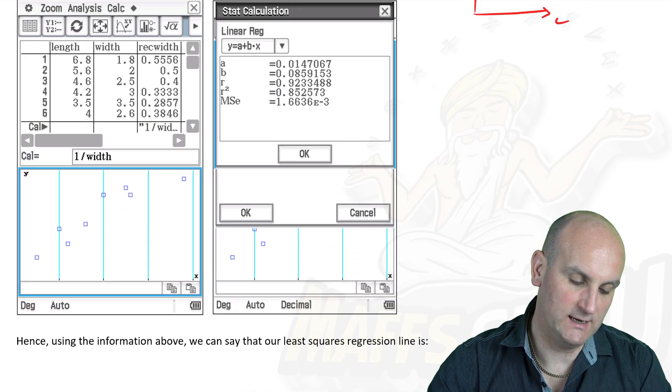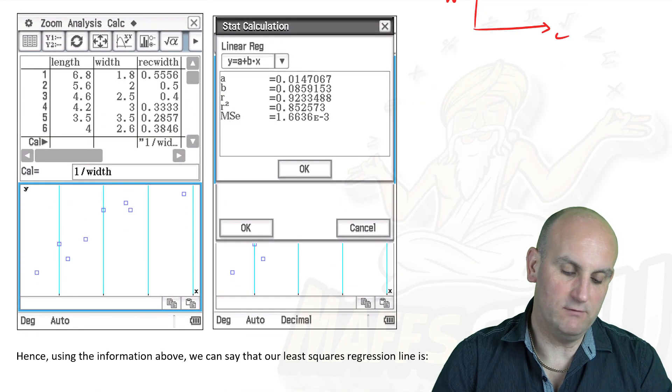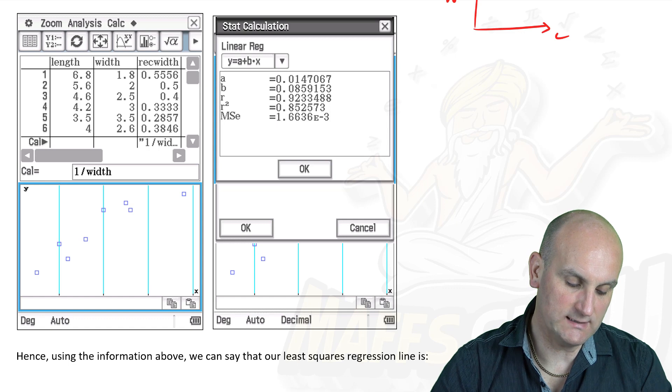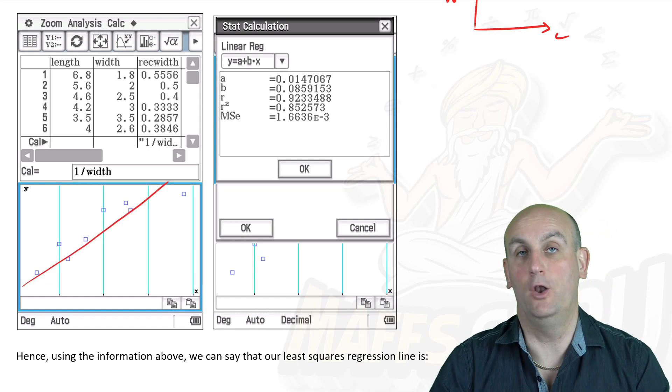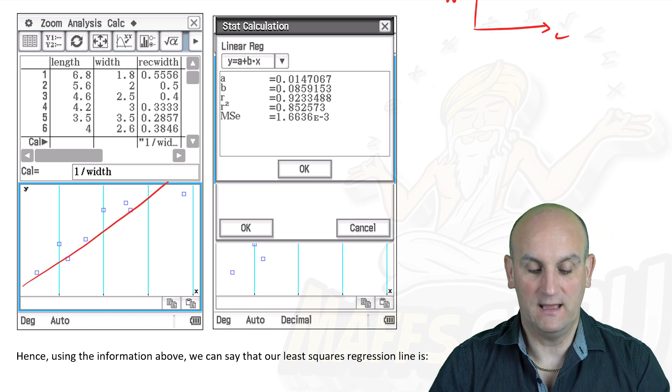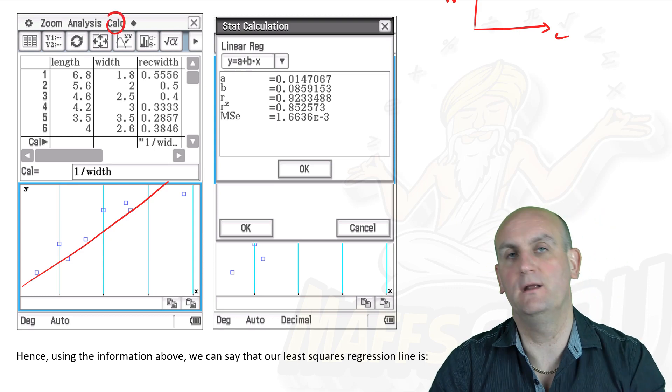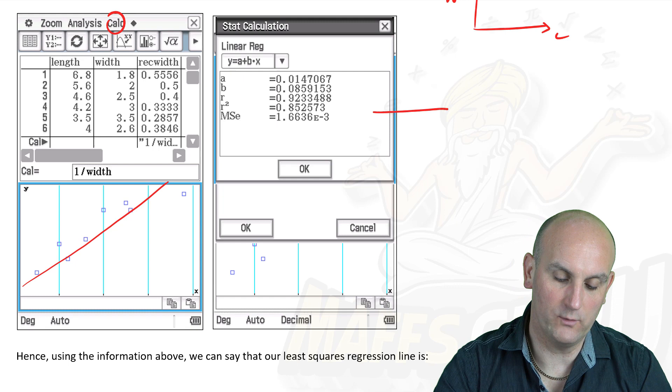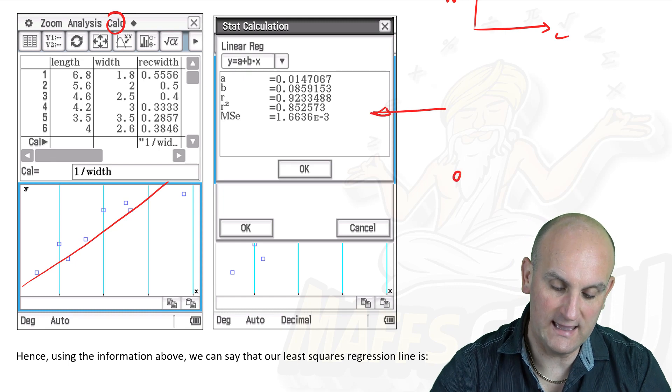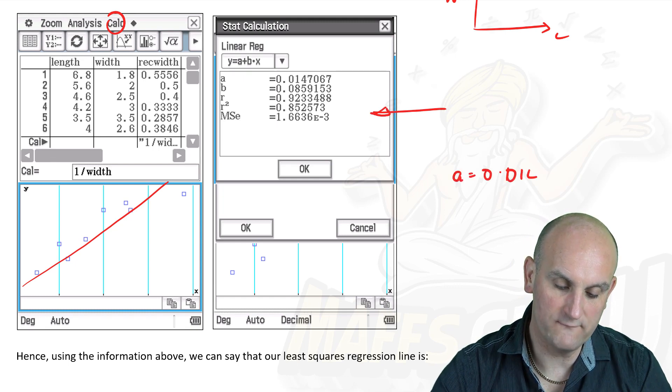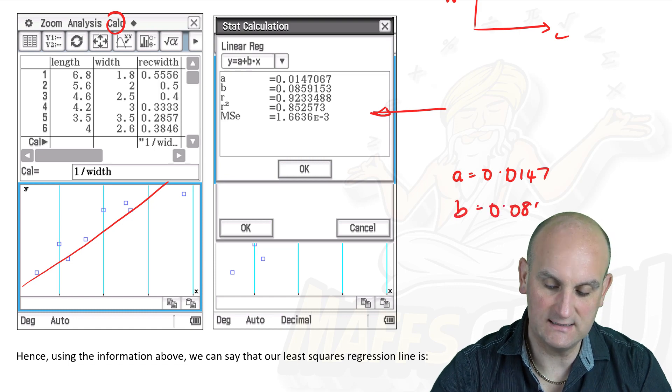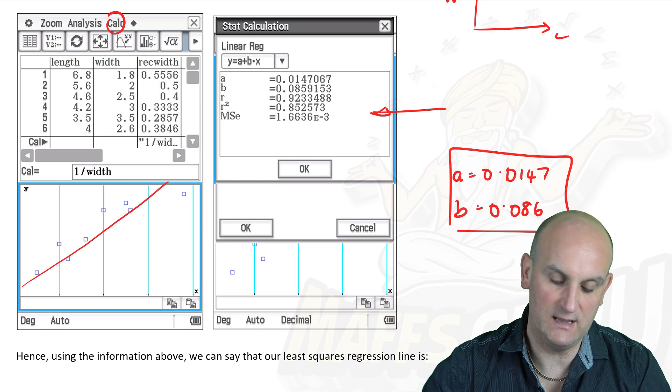Having done that, what do I do next? Well, I linearized my data. I wanted to check that it worked, and actually, that seems to be a lot more linear than it was. And having done that, I've gone Calc, Regression, and Linear Regression. Out, once again, has come my values, where a is equal to 0.0147, and b has worked out to be 0.086. So there are my values of a and b.